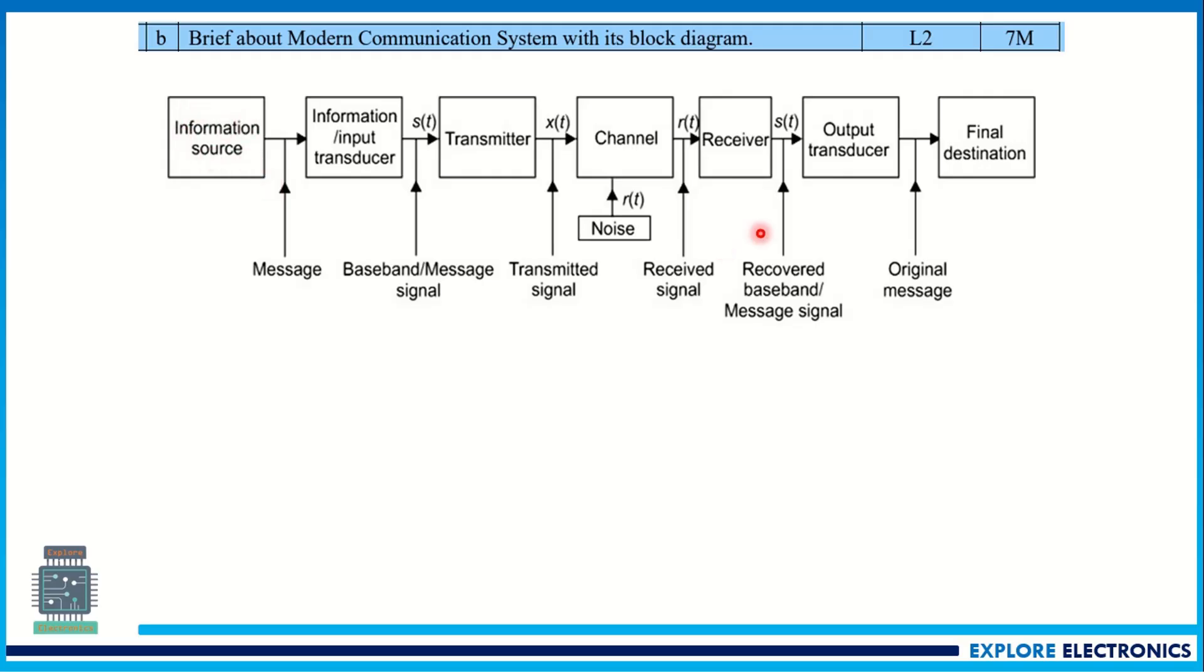This is the block diagram of any communication system. There is an information source here. Here is the destination. In between we will be having a channel. This channel can be a wire if it is a wired communication, otherwise it will be a wireless media like here. So while transmitting in this channel, noise may be added up. So noise is given here.